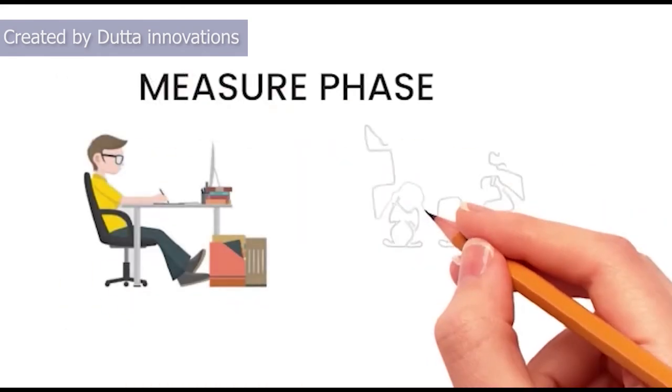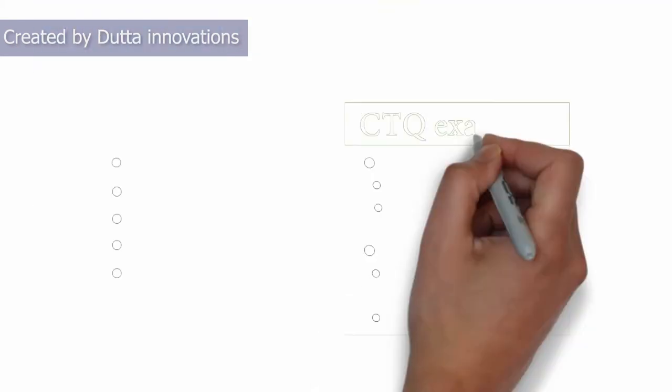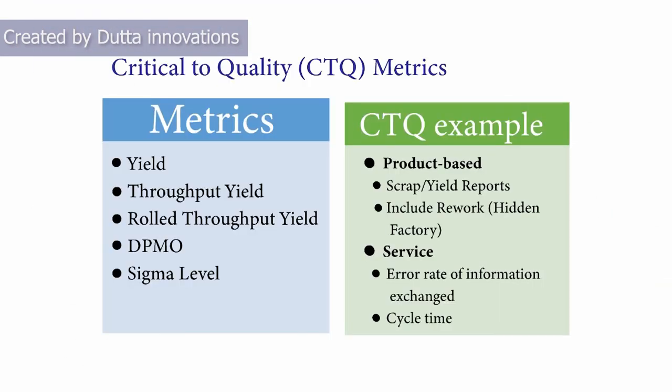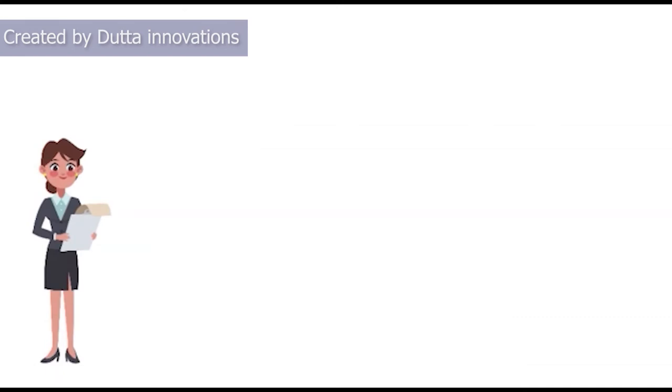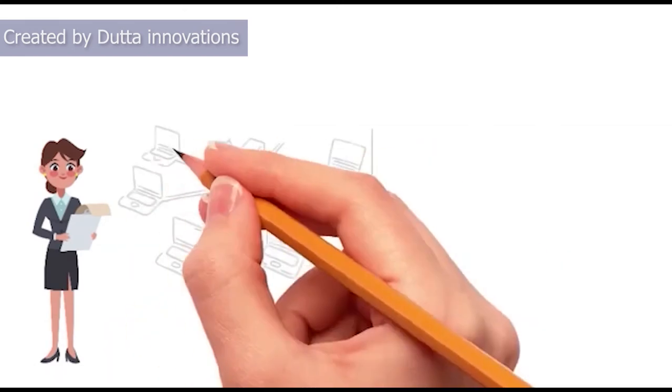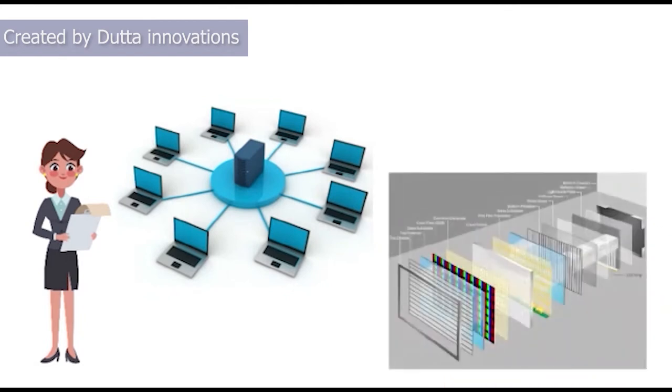Next is the measure phase. Once the project team finalized the CTQs and the KPIs, it was time to start collecting data from the current process. Sophia observed that in the current scenario, 50 laptops are manufactured in a day and each laptop is outfitted with a pair of screen layers by one of the 10 machines used.